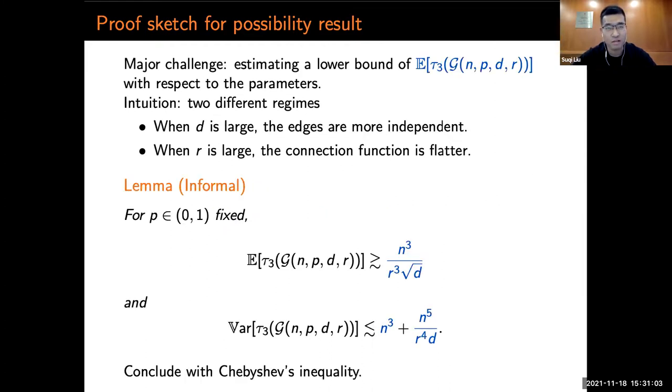The major challenge in the work is to estimate a lower bound for the expected number of triangles in G(n,p,d,R), but with respect to the parameters. This is kind of a quantitative correlation inequality for the edges. The proof follows an intuition that there are two distinct regimes. When the dimension is large, following the Wishart to GOE transition, the edges are more independent. But when R is large, the connection function is kind of flat, which follows from a linear extension or tail extension work.